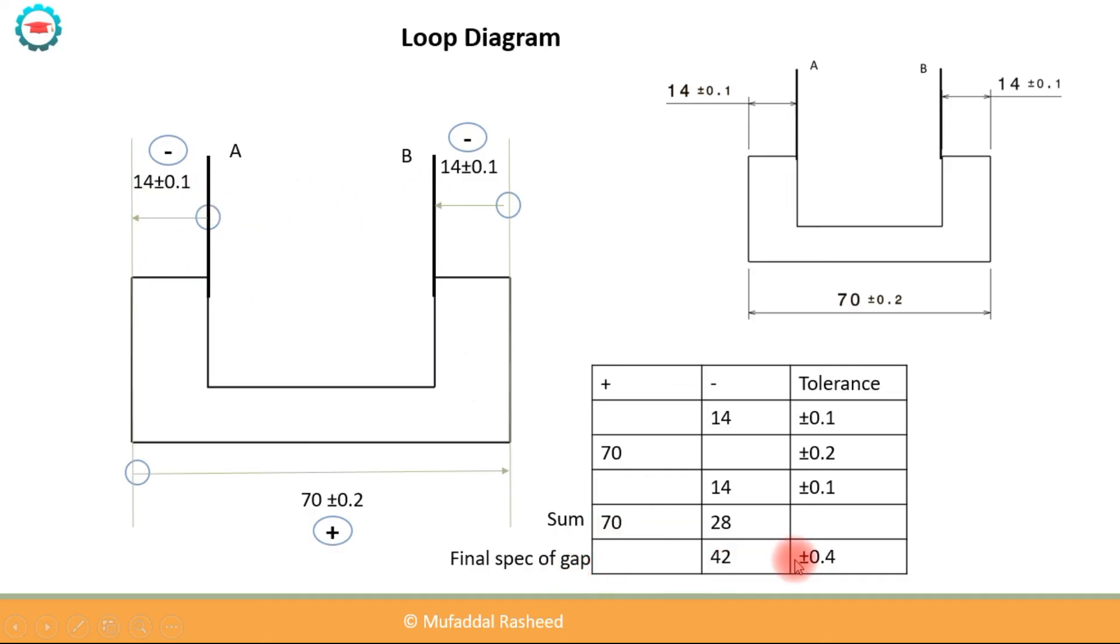So 70 minus 28 is 42. So 42 will be the nominal dimension of this AB gap. And the tolerance for that specification would be the addition of all the tolerances: plus or minus 0.1, plus or minus 0.2, and plus or minus 0.1. Summing them all, we get plus or minus 0.4. So the final specification of the gap AB will be 42 plus or minus 0.4.